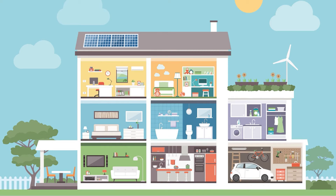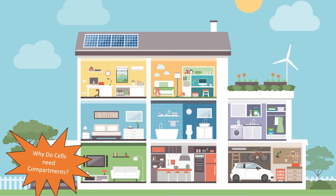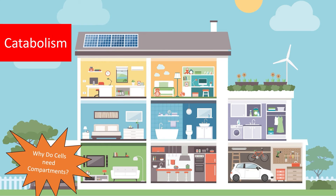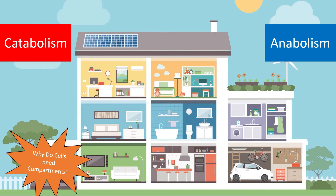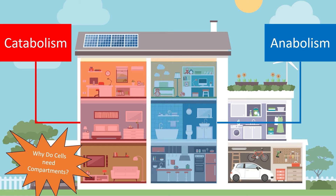Cells work through the same principle of compartmentalization. The metabolic reactions of catabolism, or breaking substances down, must be separated from the metabolic reactions of anabolism, or building new substances. Much like the rooms of your house, these reactions must take place in different physical locations that have the right environment.